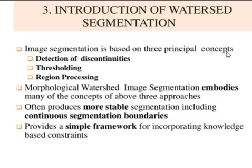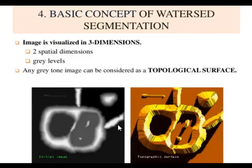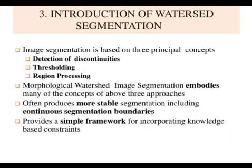Image segmentation is basically dependent on three different criteria: continuity, thresholding, and region processing. More stable segmentation is done in continuous segmentation boundaries. We will study a simple framework based on all different constraints.